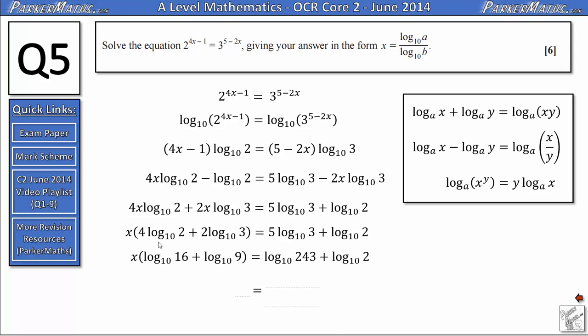For the final line of working, I'm going to do two stages in one. I'm going to combine these logs together. And I'm also going to divide through so that x is on its own over here. To combine the logs on the right hand side, I need to do 243 multiplied by 2. So that becomes 486. And then on the left hand side, I need to do 16 multiplied by 9, which gives me 144. So I get x equals log 10 of 486 divided by log 10 of 144.